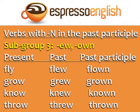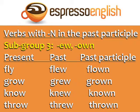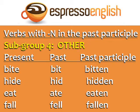Subgroup three: verbs ending in EW in the past and OWN in the past participle. Fly — flew — flown. Grow — grew — grown. Know — knew — known. Throw — threw — thrown.